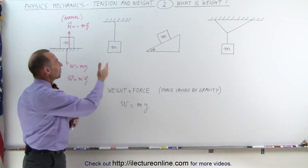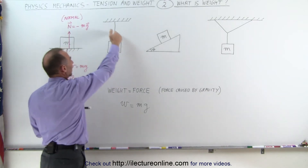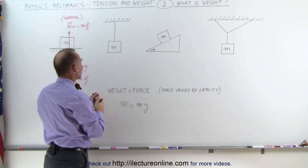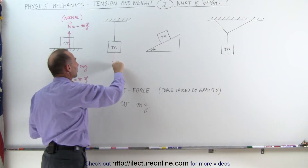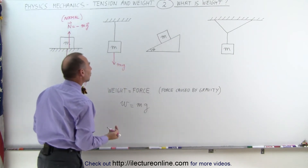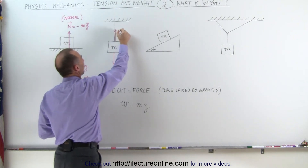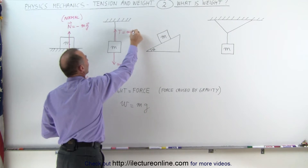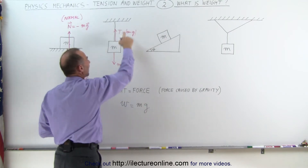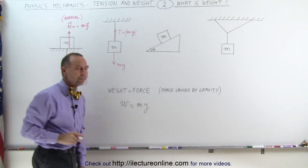What does it look like when we have an object hanging down from a string? The force of gravity pulls down on the object with magnitude mg, and there is an opposite force in the opposite direction — the tension on the string — which pulls upward with the same magnitude mg. So the magnitude of the tension equals the magnitude of the weight.